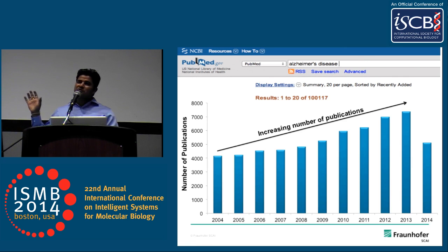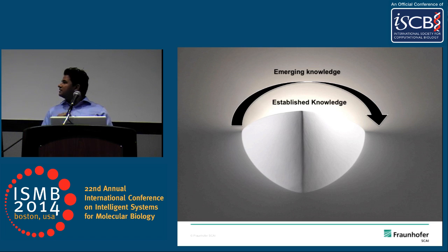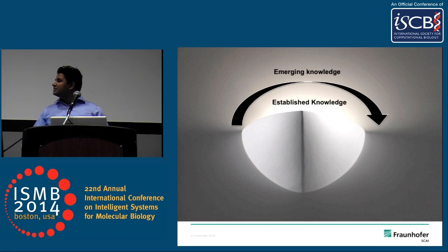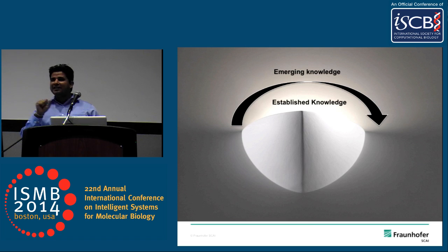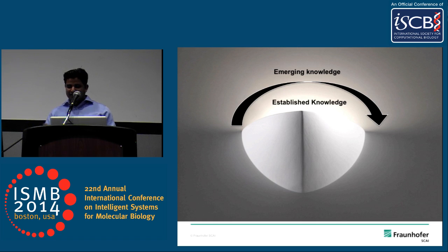If you zoom into this trend of literature data, you will find two kinds of trends — or two kinds of knowledge — existing in there. One is emerging knowledge and one is established knowledge. Established knowledge refers to things which are already known, like APP playing a role in the disease: once speculated, it is now clear. But apart from established knowledge, there are many candidates in the literature still speculated to play a role in the disease.